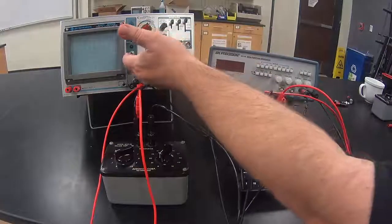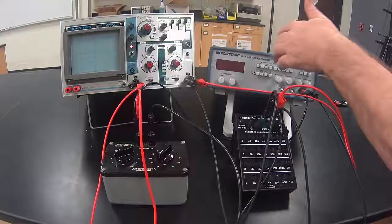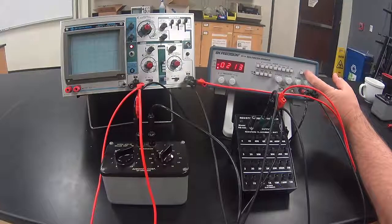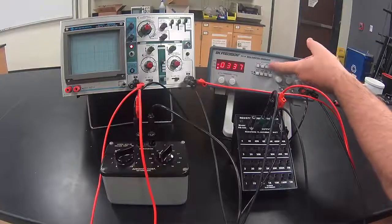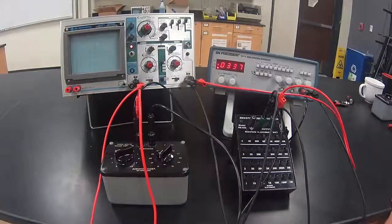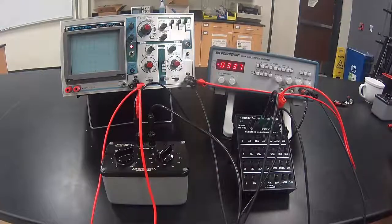Start by turning on the oscilloscope, then turn on the function generator. Put it on square wave. Set it on 500Hz range and somewhere to frequency between 300 and 400Hz should be fine.